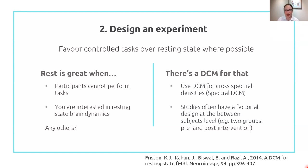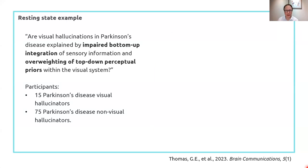If you do want to use resting state, there is a DCM for that: it's called DCM for cross-spectral densities, or spectral DCM. In this case, factorial designs are still a really good idea, but now the factorial design is typically at the between-subjects level. You will have perhaps two groups of participants — patients and controls — as one factor, and the other factor might be pre and post an intervention, such as the administration of a drug or some training. I'll give you an example of a really nice application of spectral DCM for resting state.